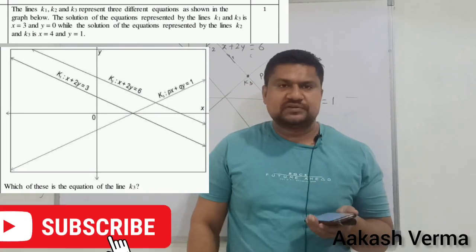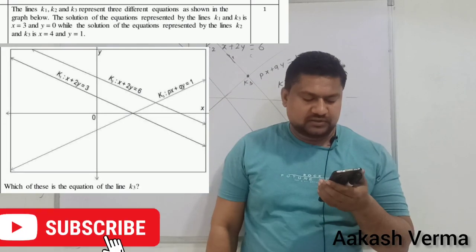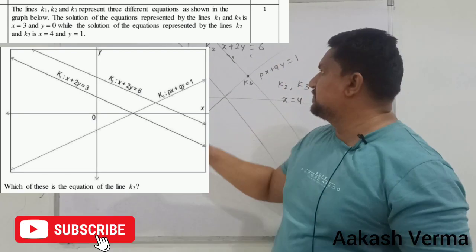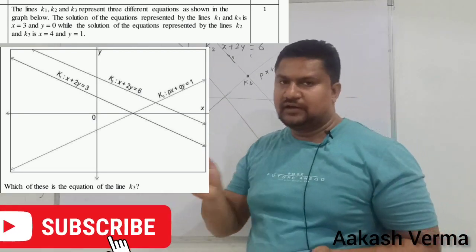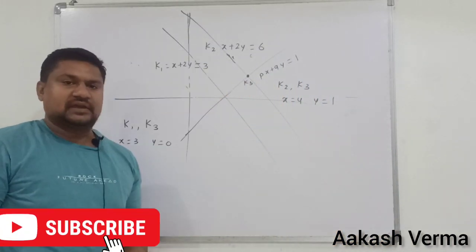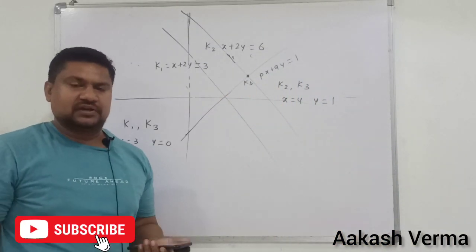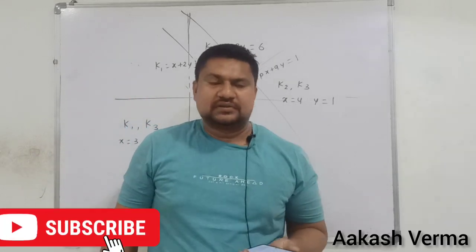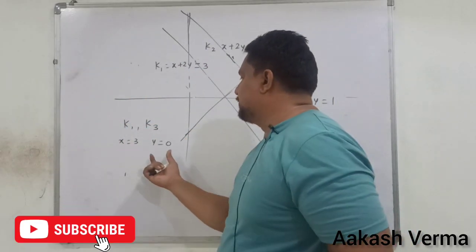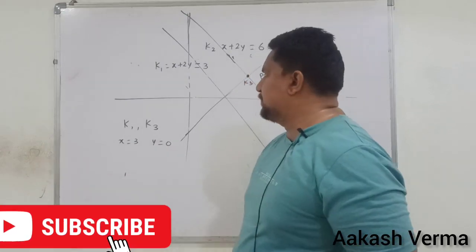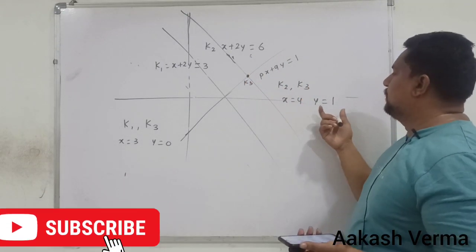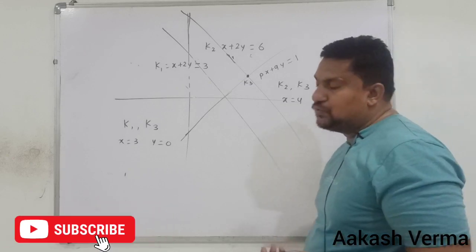Question number 2: you can see on the screen there are three linear equations k1, k2, k3. The solution of k1 and k3 is x equal to 3 and y equal to 0. And the solution of k2 and k3 is x equal to 4 and y equal to 1.